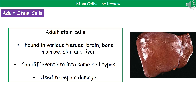While embryonic stem cells can differentiate into all cell types, adult stem cells can only differentiate into some cell types. These are particularly used to repair damage, so if you suffer damage to your liver, the stem cells there can repair it.